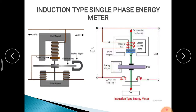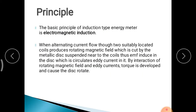The recording mechanism has front panel dials that show readings. Its function is to record continuously the number on the dial, which is proportional to the revolutions made by the moving system. The number of revolutions of the disc is a measure of the electrical energy passing through the meter.